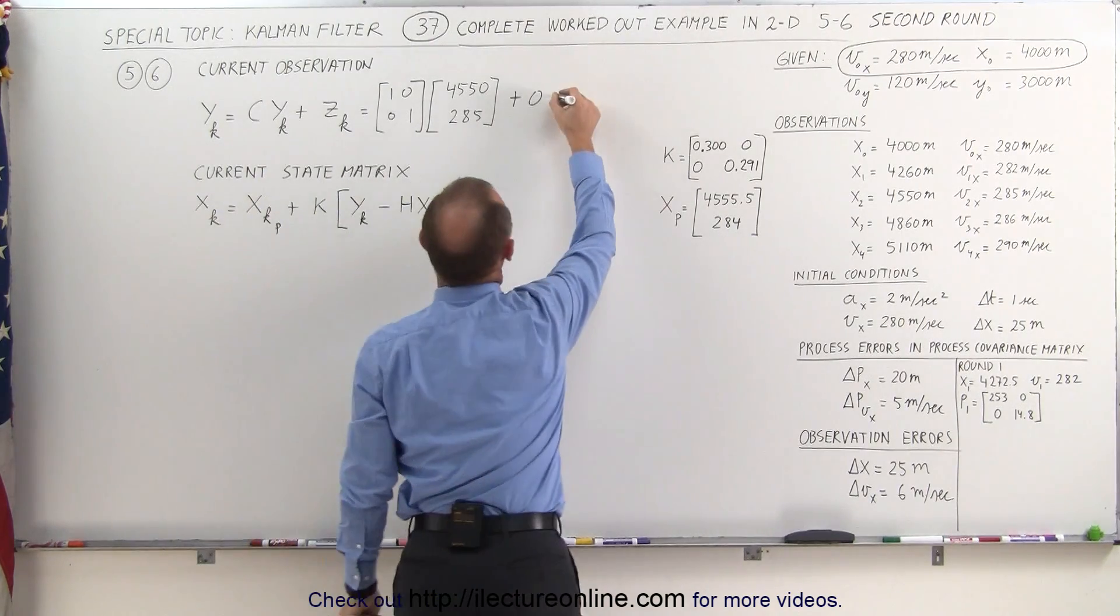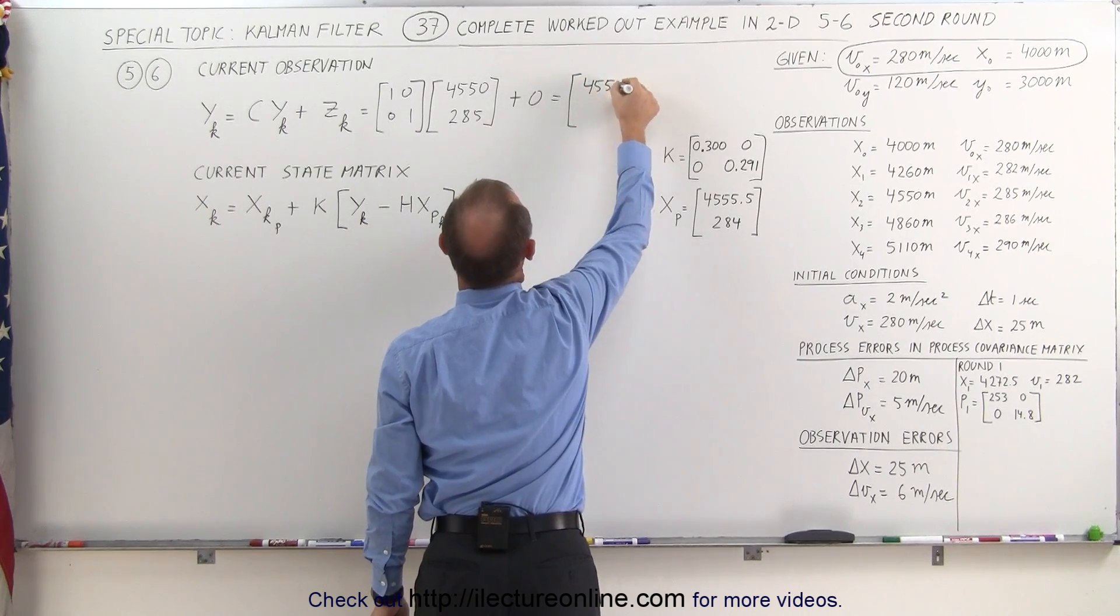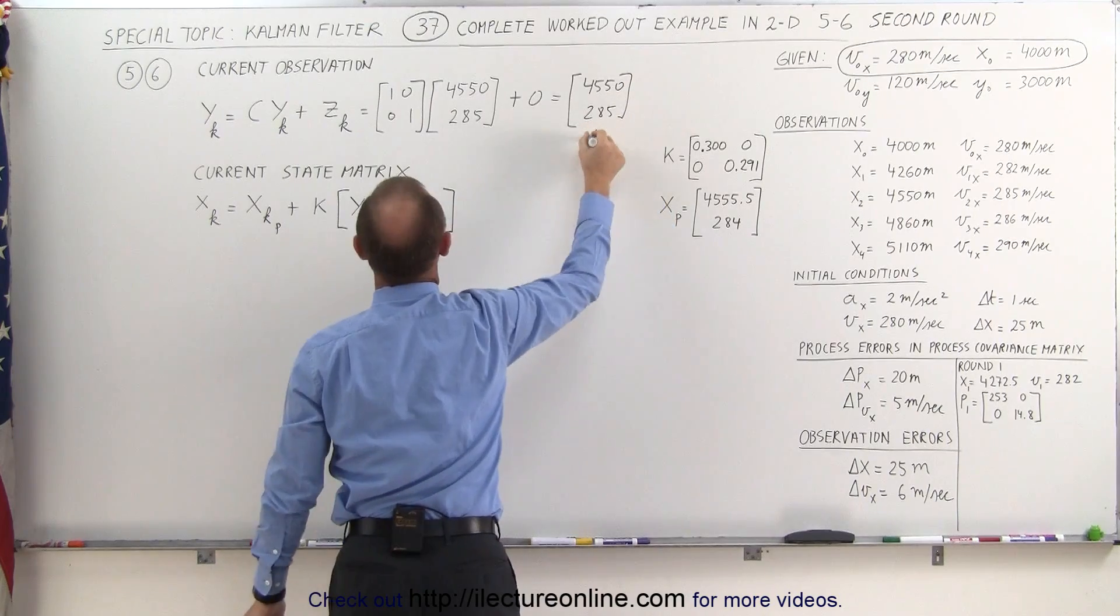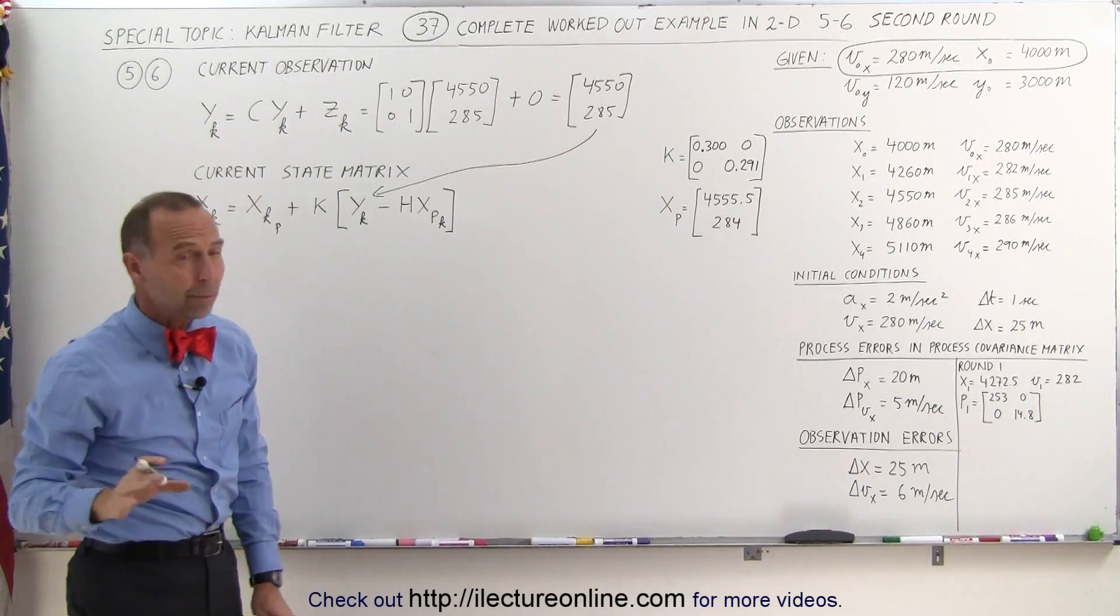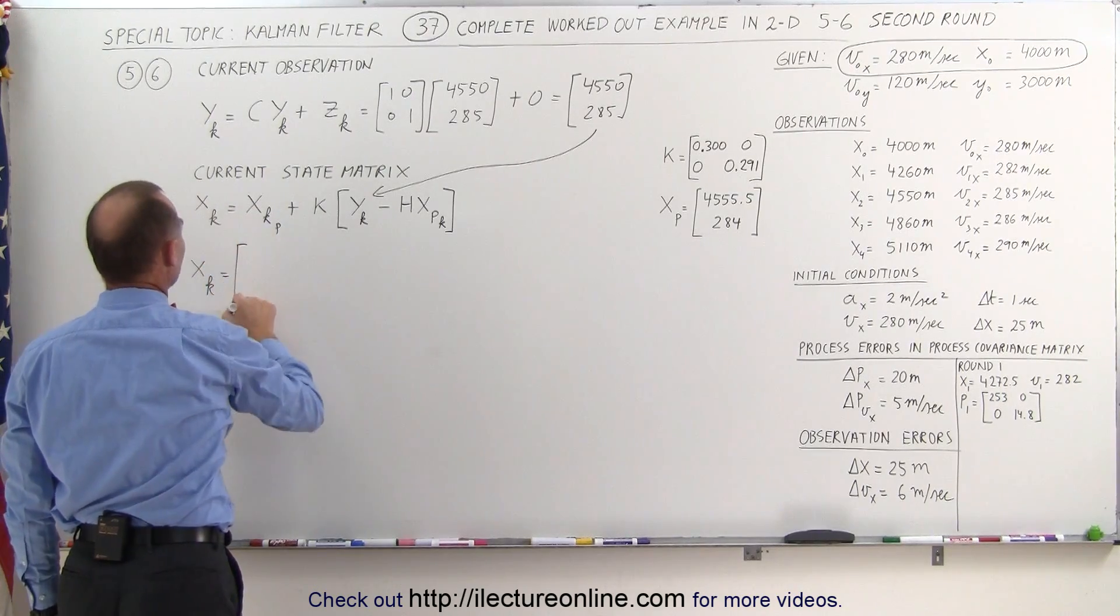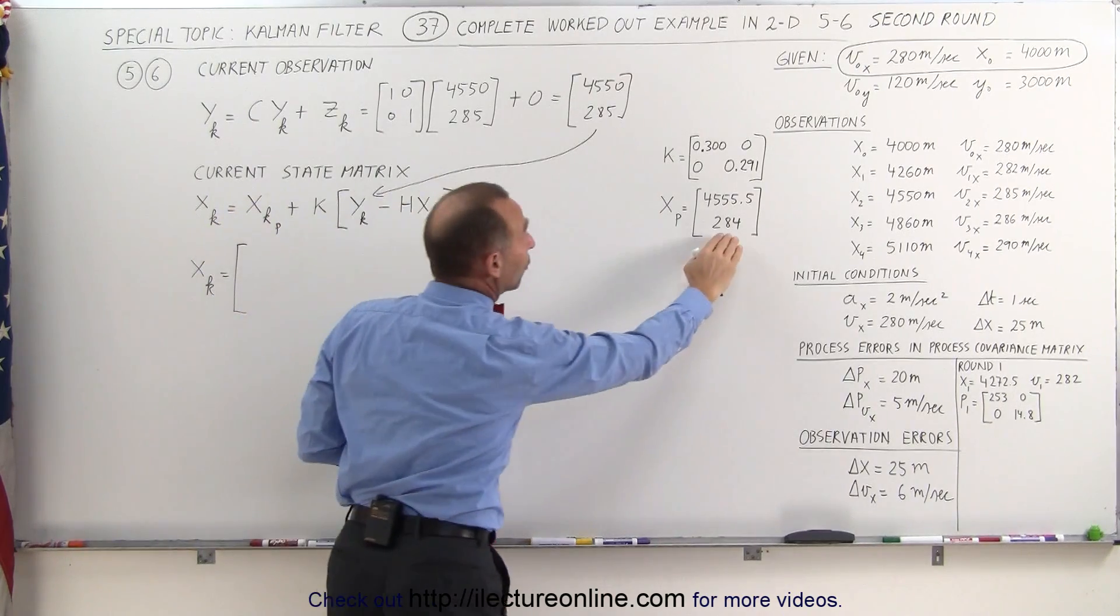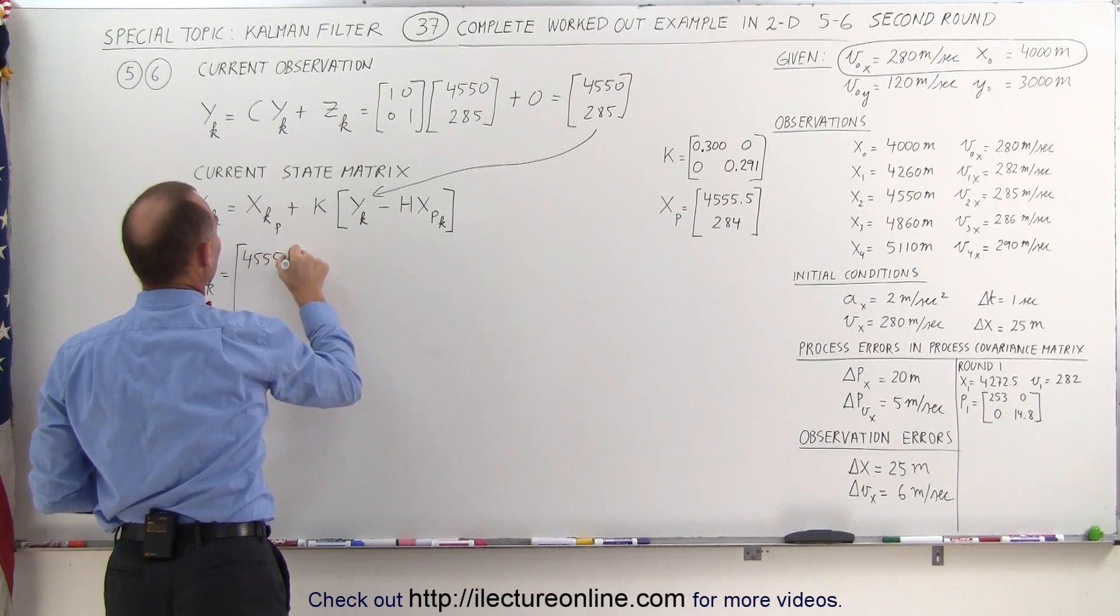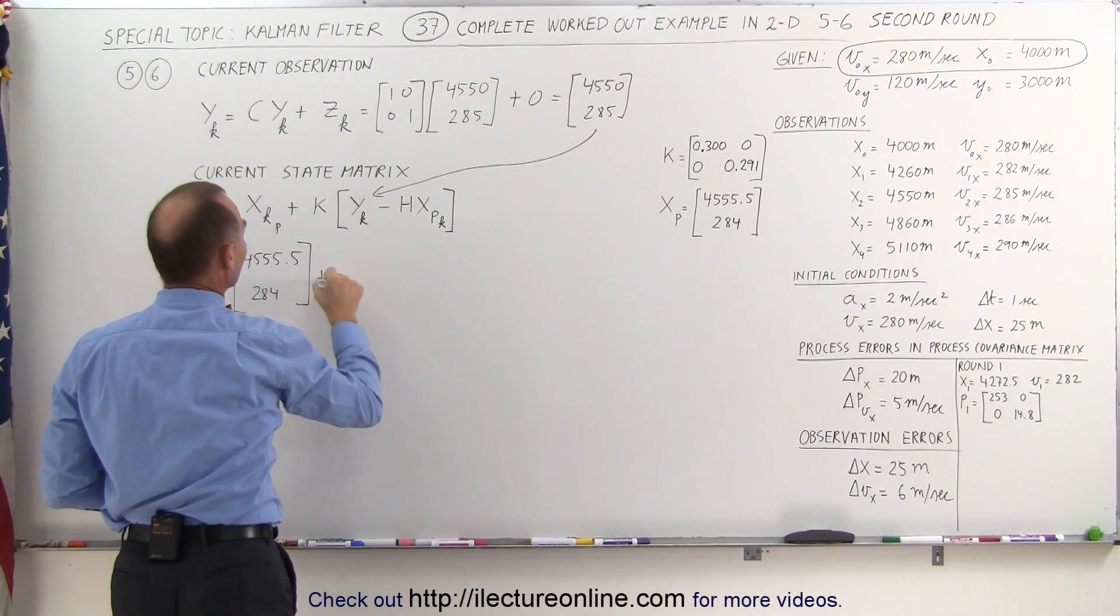Now, when we multiply that, we get simply a matrix that looks like this. 4550 for position and 285 for velocity, which is then going to be plugged into the matrix over here. And now we're ready. The new state matrix is going to be equal to the predicted state matrix of round 2, which was 4555.5 for position and 284 for velocity.